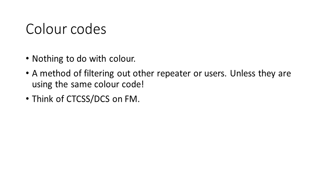As well as using time slots, DMR radios use colour codes. It's not as complicated as it sounds and actually has nothing to do with colour. Colour codes are simply a way of filtering out other DMR traffic — a radio or repeater will only listen for and decode traffic that has the same colour code it has been programmed for, and any traffic with a different colour code will be completely ignored. This is similar to CTCSS and DCS on analog FM. The purpose of colour codes is so that multiple repeaters or radio systems can be set up on one channel in different areas, and users will not accidentally transmit into another business's repeater if they enter its coverage area.